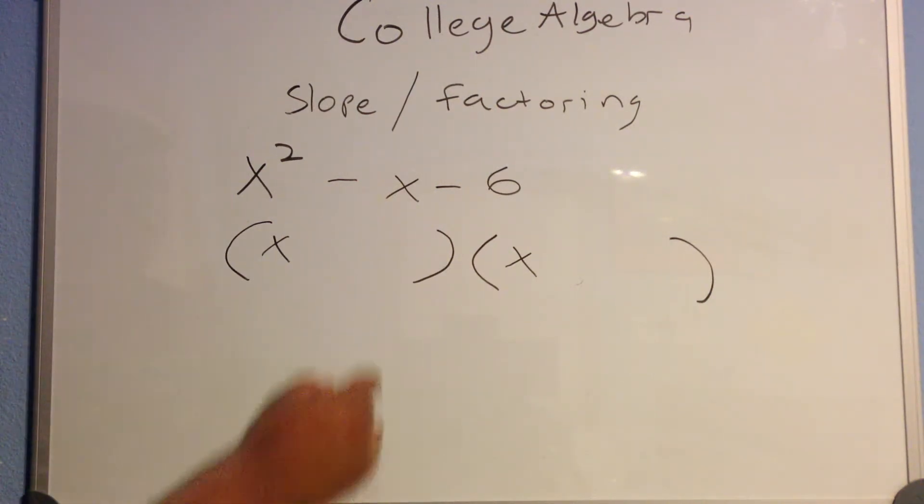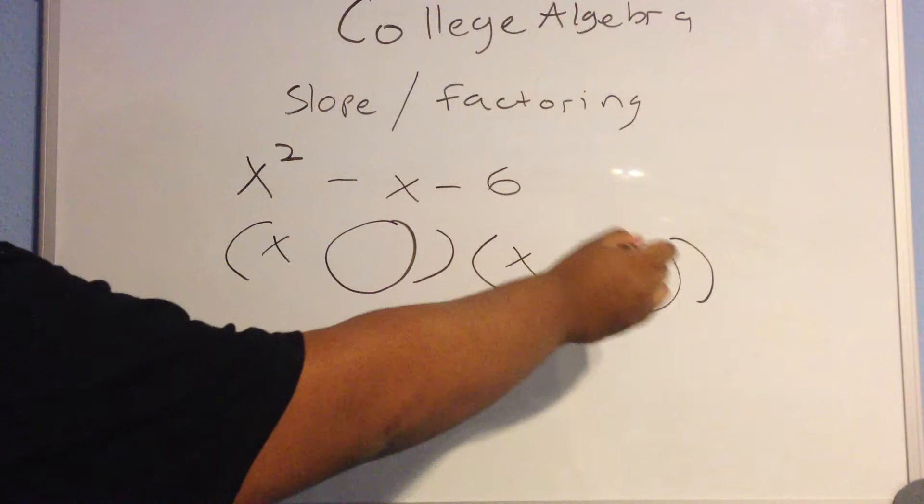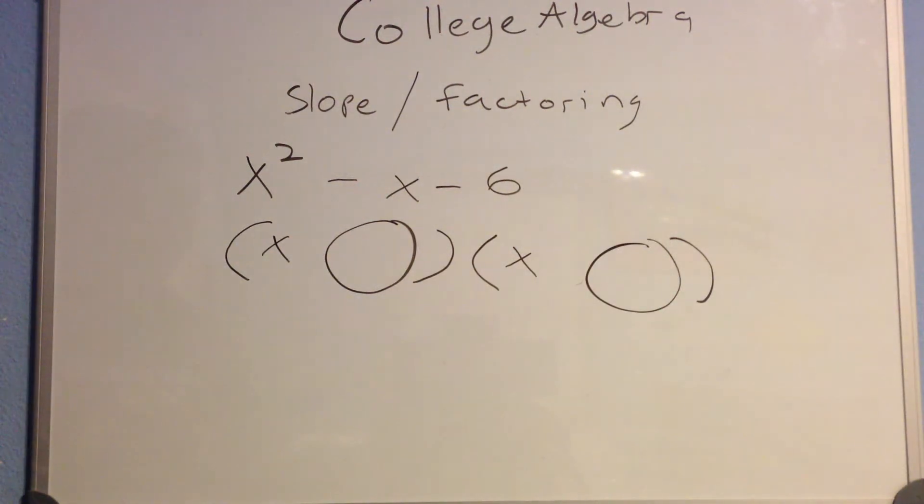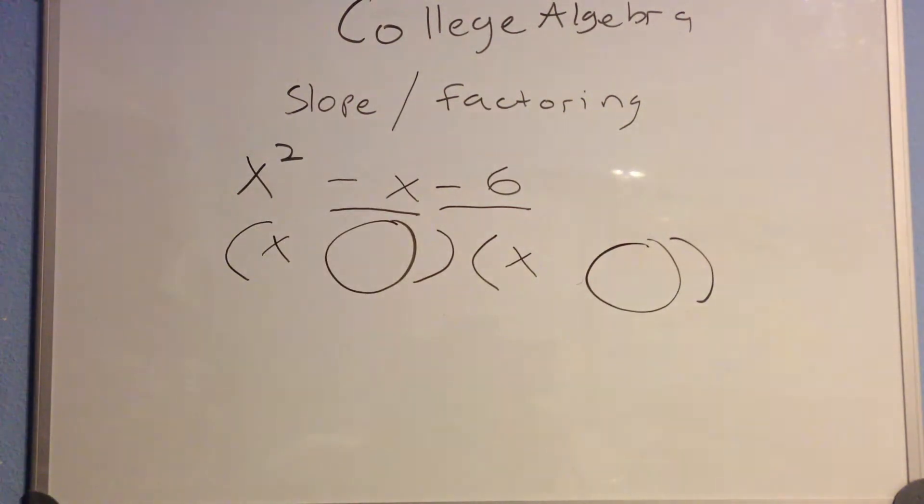The numbers here, you have to figure out two numbers that would have to be, when multiplied, equal to negative 6, and when added, equal to negative x. What are two numbers here that works out?